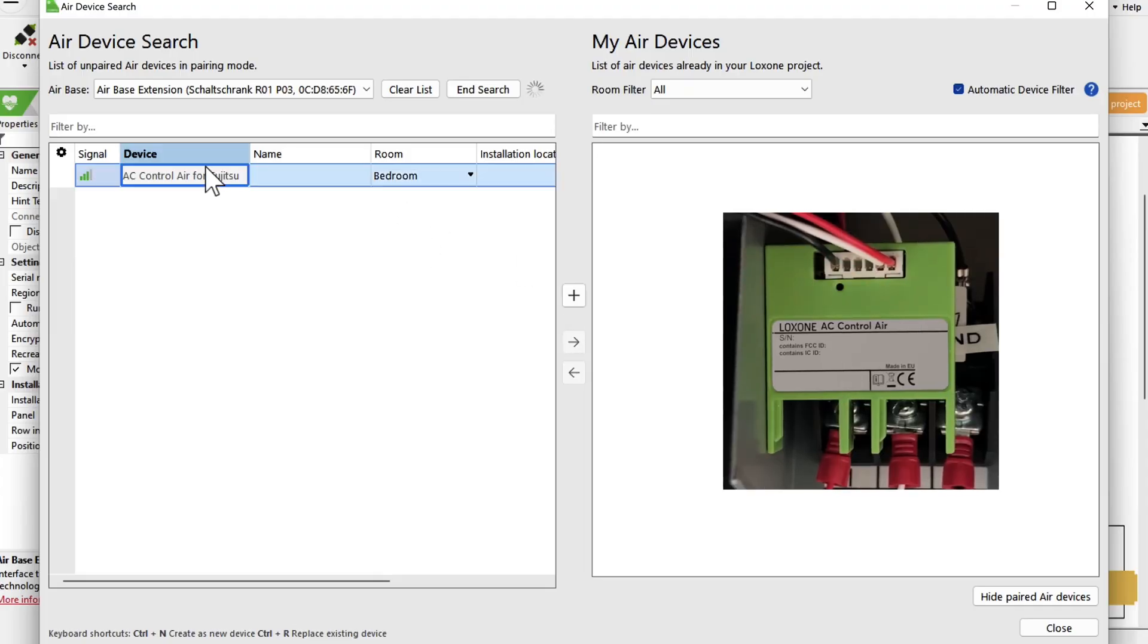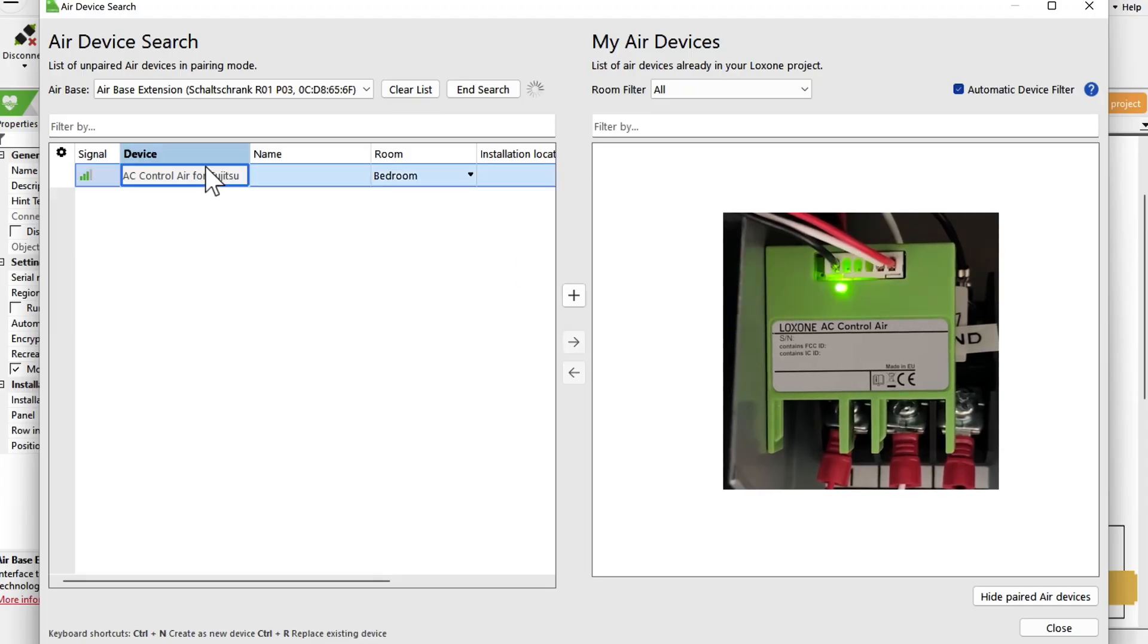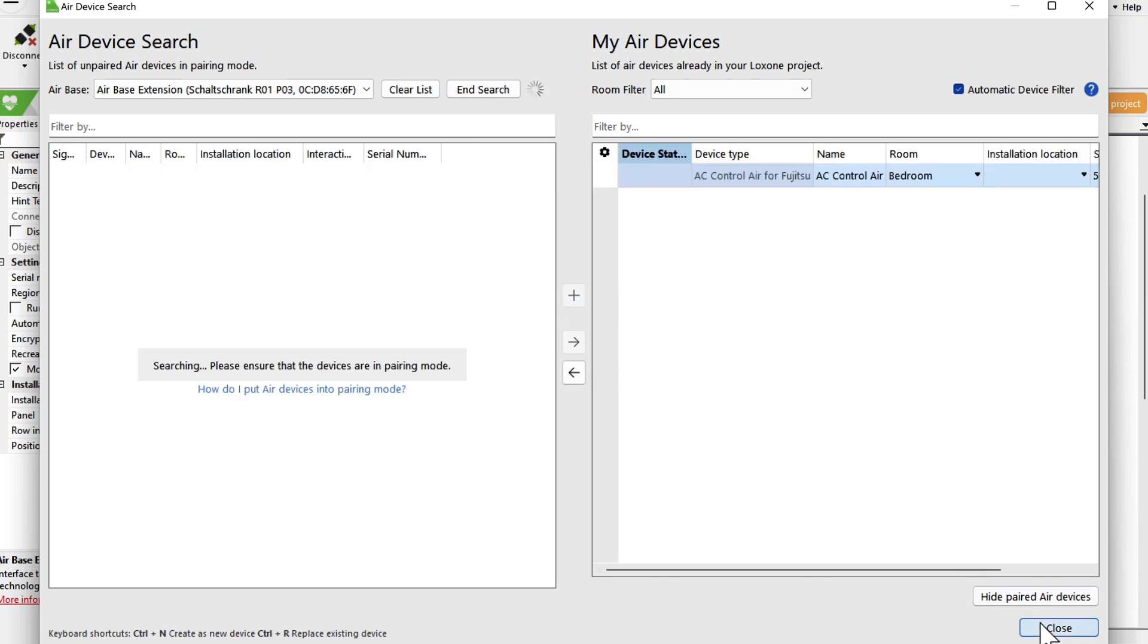Just recently, we've released our newest product, the AC Control Air, and integrated it into the beta version. Now it has also made it into the release version of the Loxone config and our app.